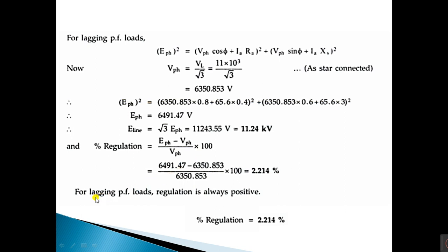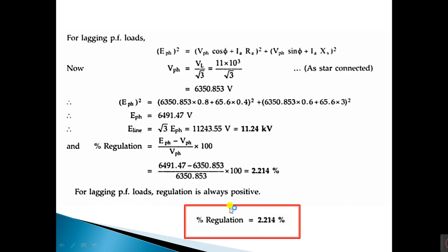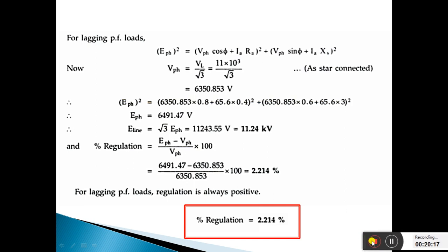For lagging power factor loads, the regulation is always positive, so the percentage regulation is 2.214%. This concludes the discussion of EMF generation of the alternator and voltage regulation. We will continue in the next session.